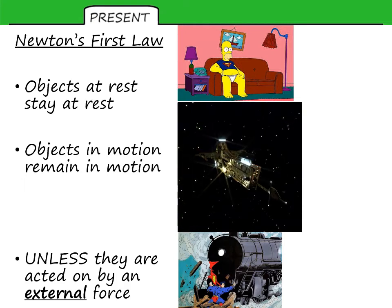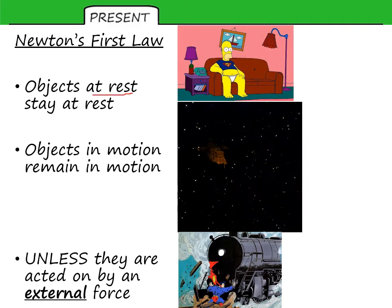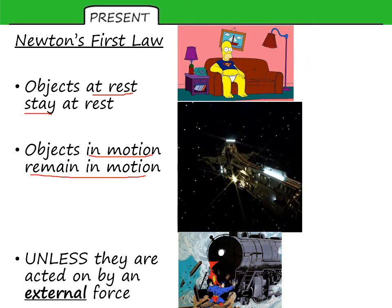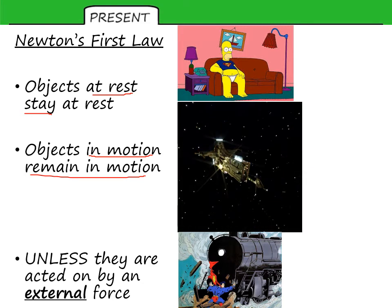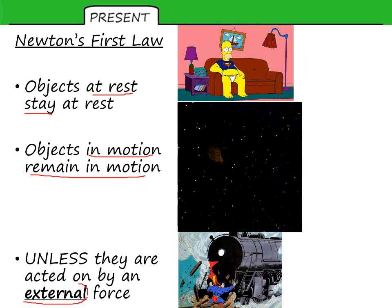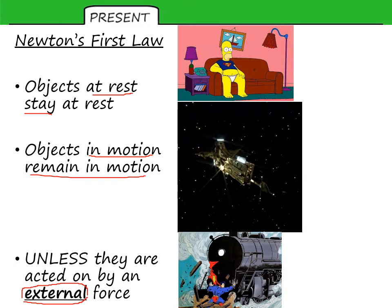The law can be summarised in a slightly different fashion, as shown here. Objects at rest stay at rest. Objects in motion remain in motion with a constant velocity, that is to say, in the same direction at the same speed, unless they are acted on by an external force. So a push or a pull that can change the speed, change the velocity.